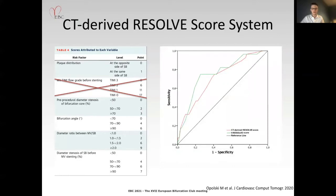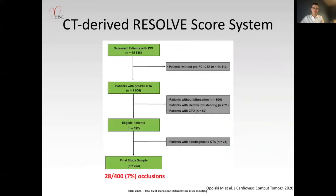Our group showed previously that the quantitative CTA Resolve Score performs as well as the gold standard angiographic visual Resolve Score. Whereas quantitative coronary analysis provides an objective determination of severity and extent of coronary artery disease, it might be time-consuming and thus less frequently used in real-life clinical practice. To simplify and expand the application of non-invasive CTA for predicting side-branch occlusion, we employed visual estimation of each constituent element of the original quantitative CTA Resolve Score. Our study included 400 bifurcation lesions in 363 patients, in whom a total of 28 side-branch occlusions were noted.